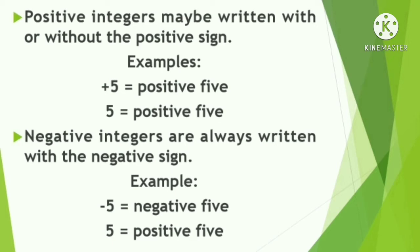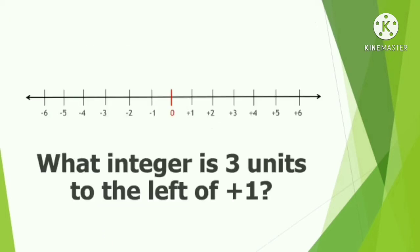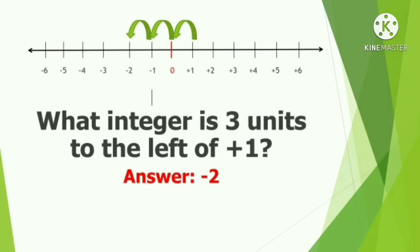If you take away the minus sign, number 5 will be read as positive 5. So, when you want an integer to become a negative, you must always write the negative sign. If I will ask you, what integer is 3 units to the left of positive 1? The answer is negative 2. From positive 1 going to the left: first unit is 0, second unit is negative 1, and third unit is negative 2.